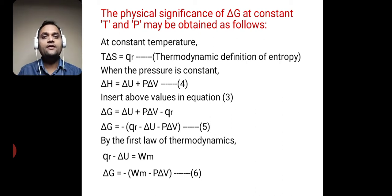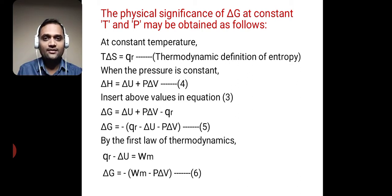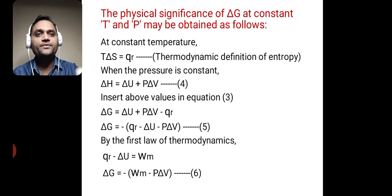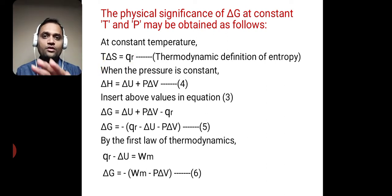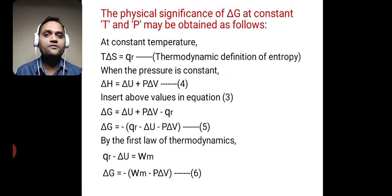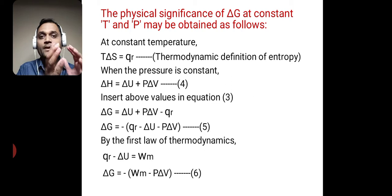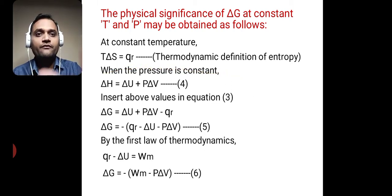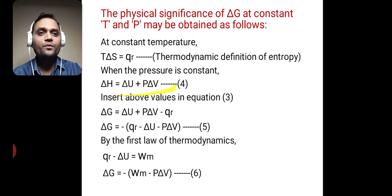The thermodynamic definition of entropy is dS equal to dQ reversible upon T. On rearrangement, that gives us T delta S is equal to Qr. Also, when the pressure is constant — unlike Helmholtz free energy where only temperature is constant — here we consider both temperature and pressure as constant. When pressure is constant, we have the relation: delta H is equal to delta U plus P delta V.